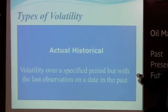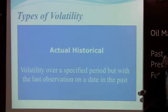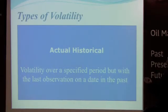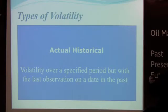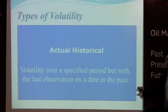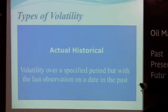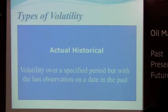There is actual historical volatility — volatility over a specified period, but with the last observation on a date in the past. For instance, volatility calculated since January 2001 until December 2007, where the last observation is in the past. This is relevant for position traders or investors — it's the main volatility fluctuation you need to look at if you want to invest in a stock or derivatives.